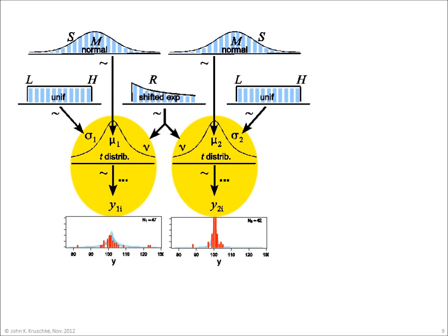This figure shows the data at the bottom in red histograms. The descriptive model is highlighted in yellow. Each group's data are described as coming from a t-distribution, as suggested by the arrows descending to the data. There are five parameters altogether, namely the means of the two groups, denoted mu1 and mu2, the standard deviations of the two groups, denoted sigma1 and sigma2, and the normality of the data, denoted nu. This model uses a single normality parameter to describe both groups, because outliers are usually relatively rare, and a more stable estimate of nu can be obtained by letting both groups provide information. Our goal is to estimate the parameter values, because the parameter values carry meaning — they describe the tendencies in the data.